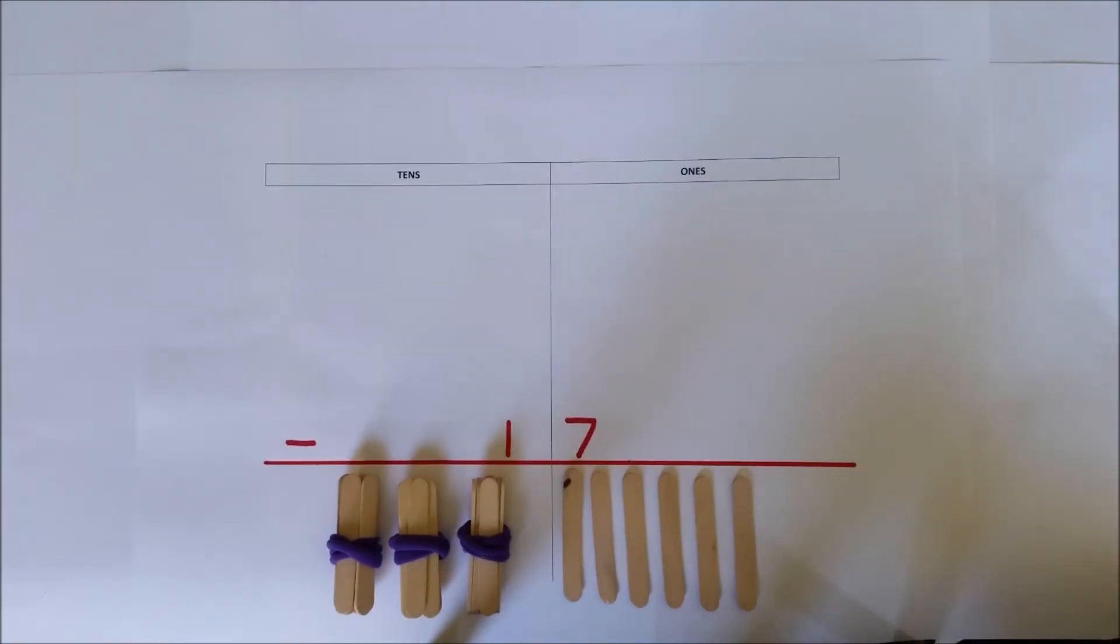So 53 take away 17 and the answer is 36. Three tens and six ones.